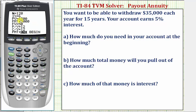We'll enter all these values here except PV for present value. N is equal to the total number of compounds over the 15 years. Because you're taking annual withdrawals of $35,000, we also assume the interest is compounded annually. So if the interest is compounded annually for 15 years, N would be 15 times one, or just 15. If it was compounded quarterly, N would be 15 times four. If it was compounded monthly, N would be 15 times 12.